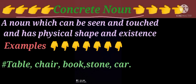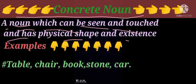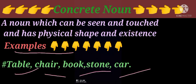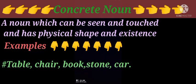Concrete Noun: a noun which can be seen and touched and has physical shape and existence. For example, table, chair — all kinds of nouns except abstract nouns.